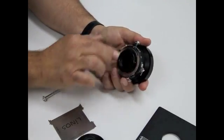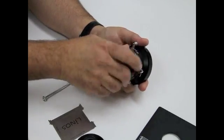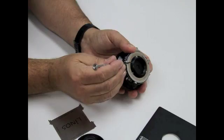Then we're going to take off the retaining ring, and then you'll notice some lenses have a little tiny indexing screw.